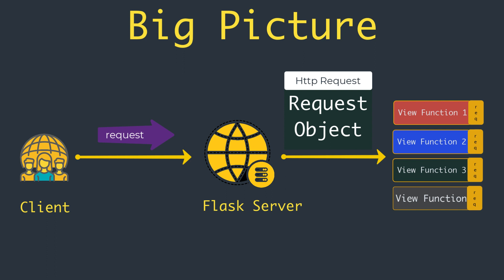This issue can be solved in Flask, as we will take a look shortly. When Flask invokes a view function, it expects its return value to be the response to the request. In most cases the response is a simple string that is sent back to the client as an HTML page, and this cycle goes on. That's the big picture of the request-response cycle in Flask.